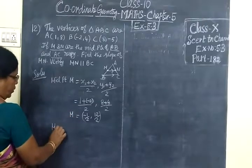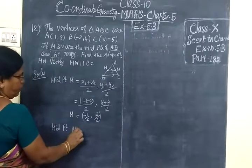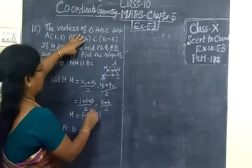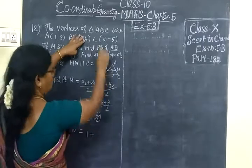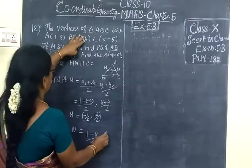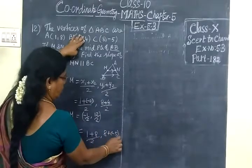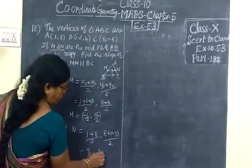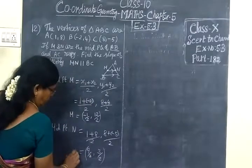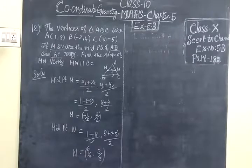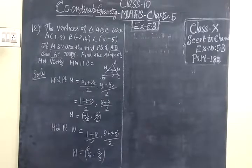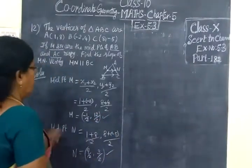Next we are finding midpoint N of AC. A and C. So the formula is X1 plus X2 by 2, Y1 plus Y2 by 2. That's (1+8)/2, (9+(-5))/2. Equals 9/2, then 8 minus 5 is 3, so 3 by 2. Therefore, the midpoint N is (9/2, 3/2). This is the answer for the 12th question.